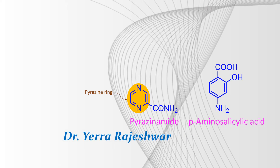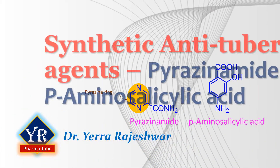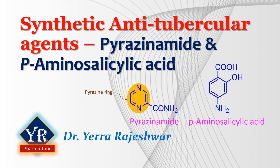Hi, this is Dr. Rajeshwar from YR PharmaTube. In the last video, we discussed the synthetic anti-tubercular agents such as isoniazid, ethionamide, and ethambutol. Click on the i button on top right of this video to watch it. See the description for the links of other topics of organic chemistry. In this lesson, we shall learn the two other synthetic anti-tubercular agents such as pyrazinamide and paraaminosalicylic acid.